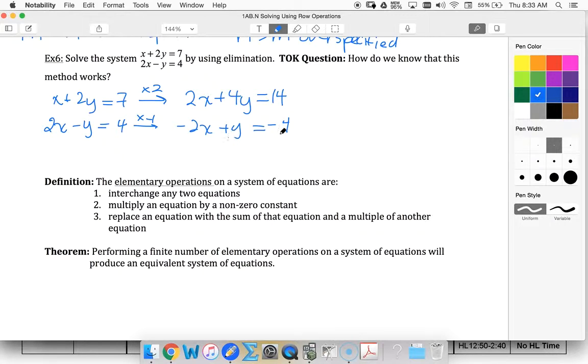Now I'm going to add my equations. If I add my equations, the x value eliminates, and I get 5y equals 10. So this implies that y equals 2.